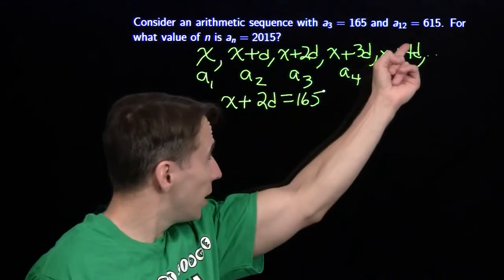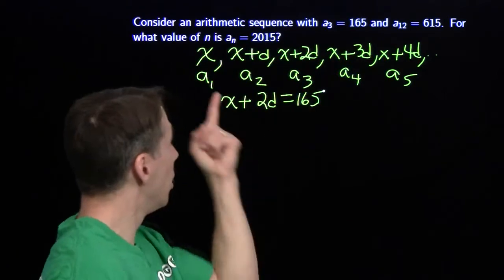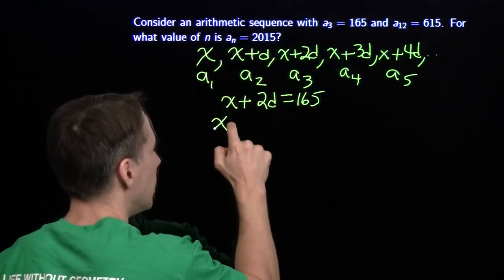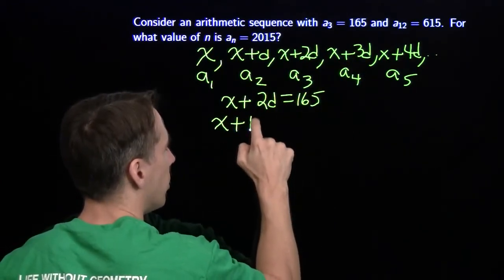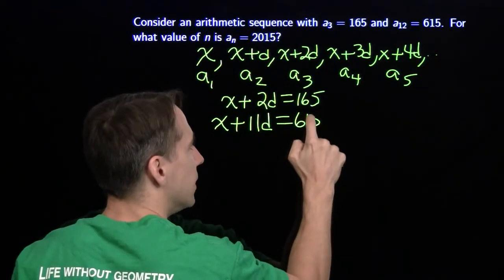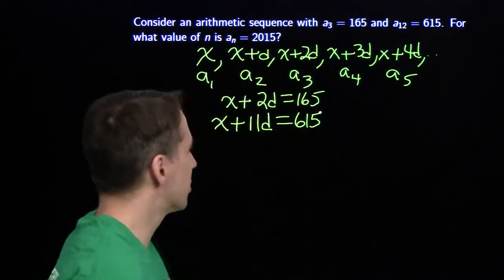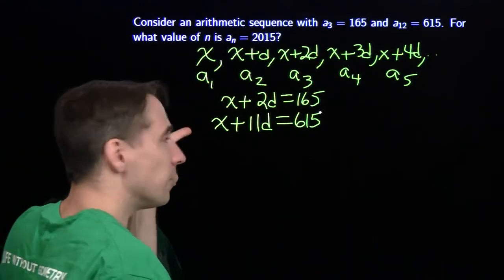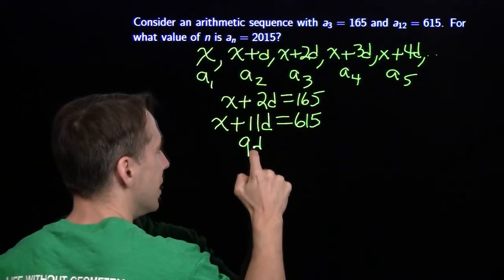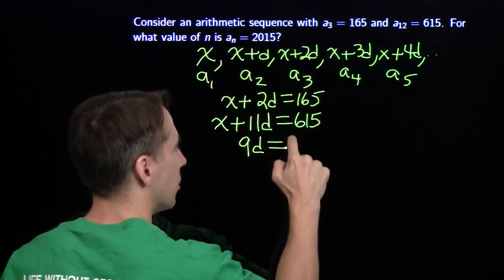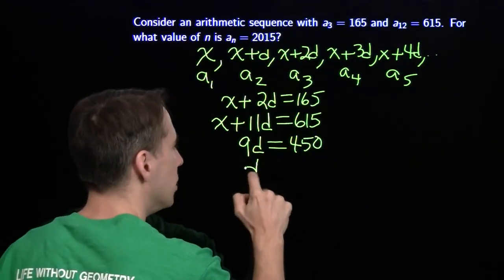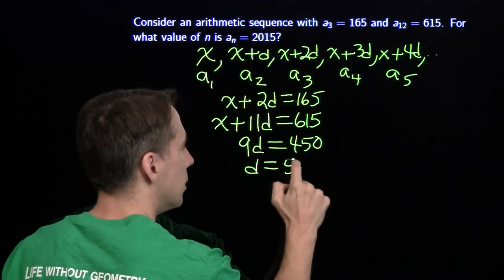We're going to build another equation from the 12th term. To get to the 12th term, we start at the first term and take 11 steps — not 12. So we have another equation: x plus 11d equals 615. Now I have a system of equations. I'll subtract the first equation from the second to eliminate x, leaving 9d on the left-hand side. On the right-hand side, I get 450. Divide both sides by 9, and d equals 50.